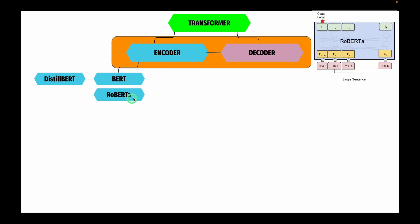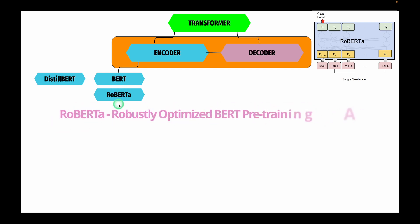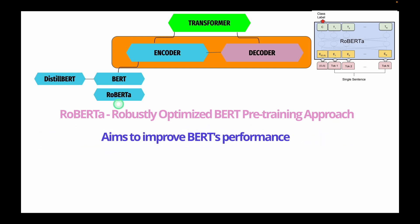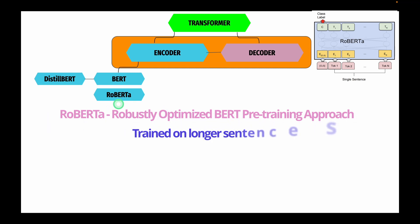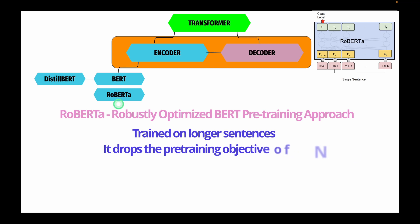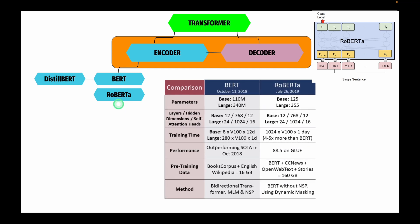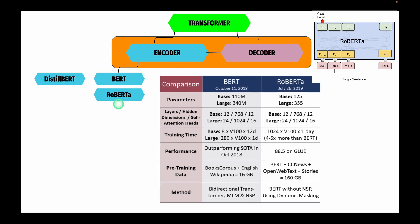The next encoder-only architecture is RoBERTa, which stands for Robustly Optimized BERT Pre-Training Approach. RoBERTa aims to improve BERT's performance by modifying the pre-training scheme. It is trained on longer sequences with more training data than BERT, and it drops the NSP or Next Sentence Prediction training objective. These two changes helped RoBERTa improve its performance compared to BERT.